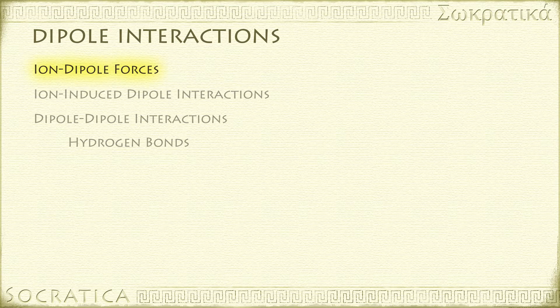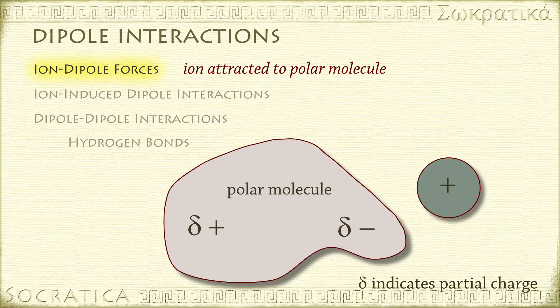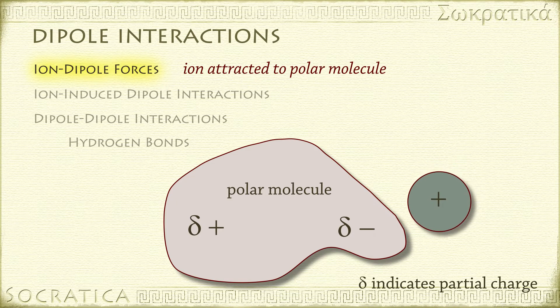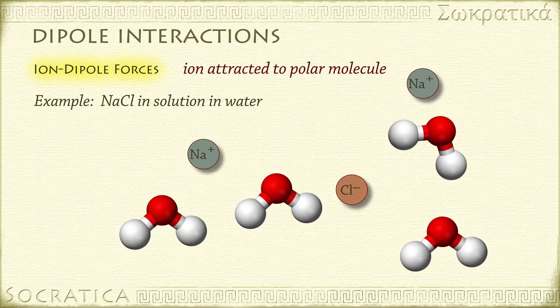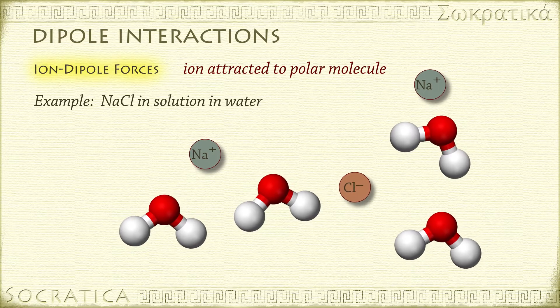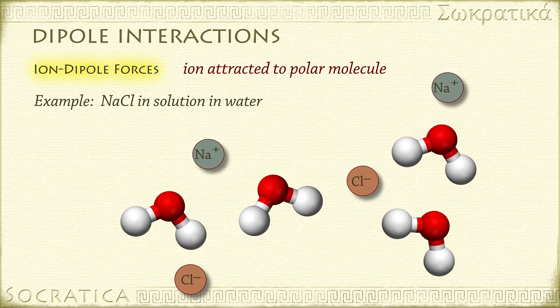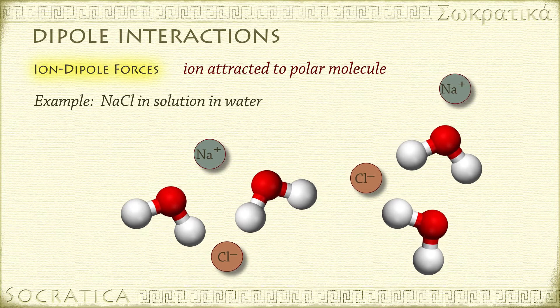Ion-dipole forces occur when ions are attracted to a polar molecule. Positive ions are attracted to the negative end of a polar molecule, and negative ions are attracted to the positive end. For example, when NaCl is in solution in water, the negative end of the polar water molecules are attracted to the positive Na+ ions.